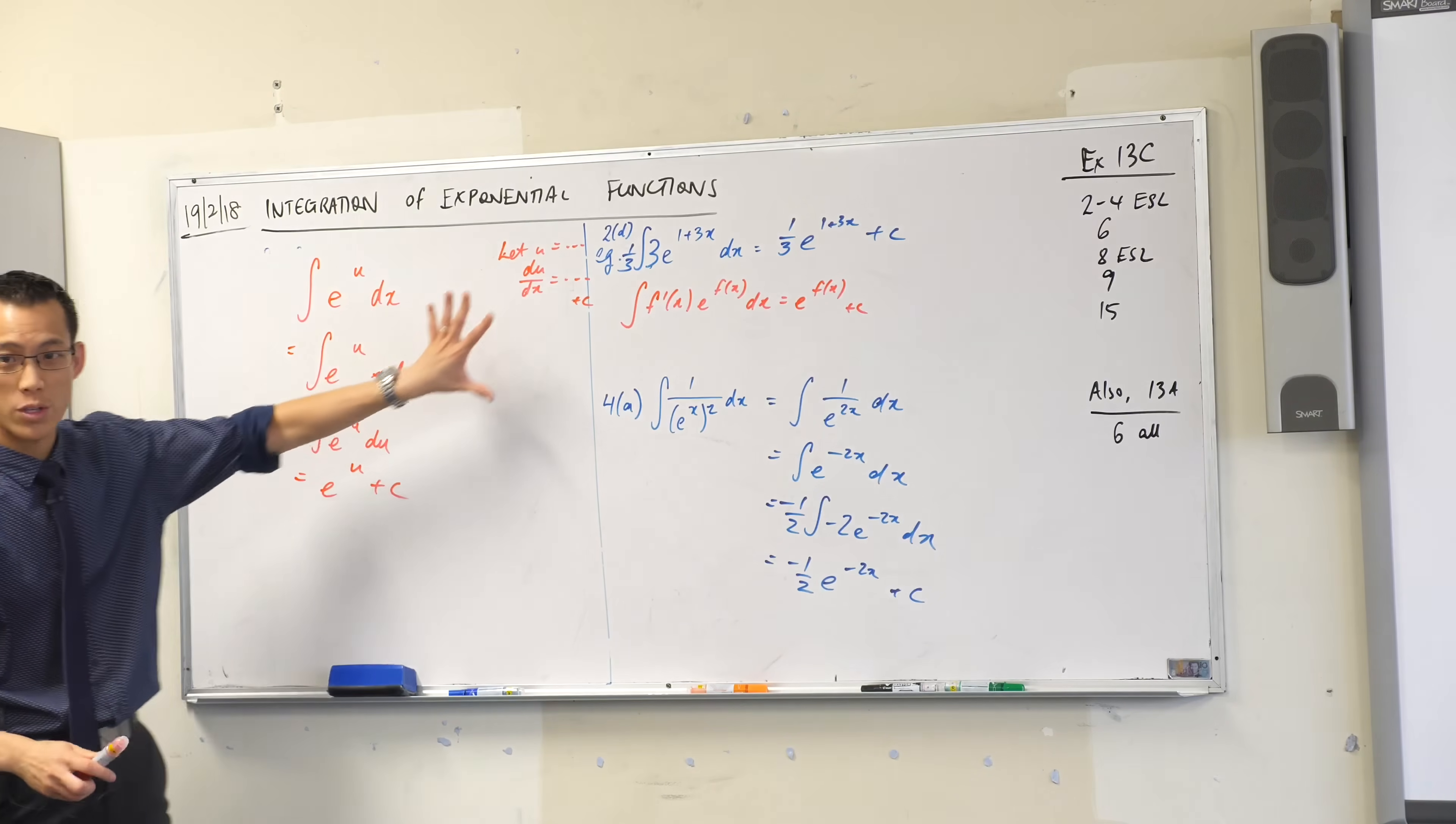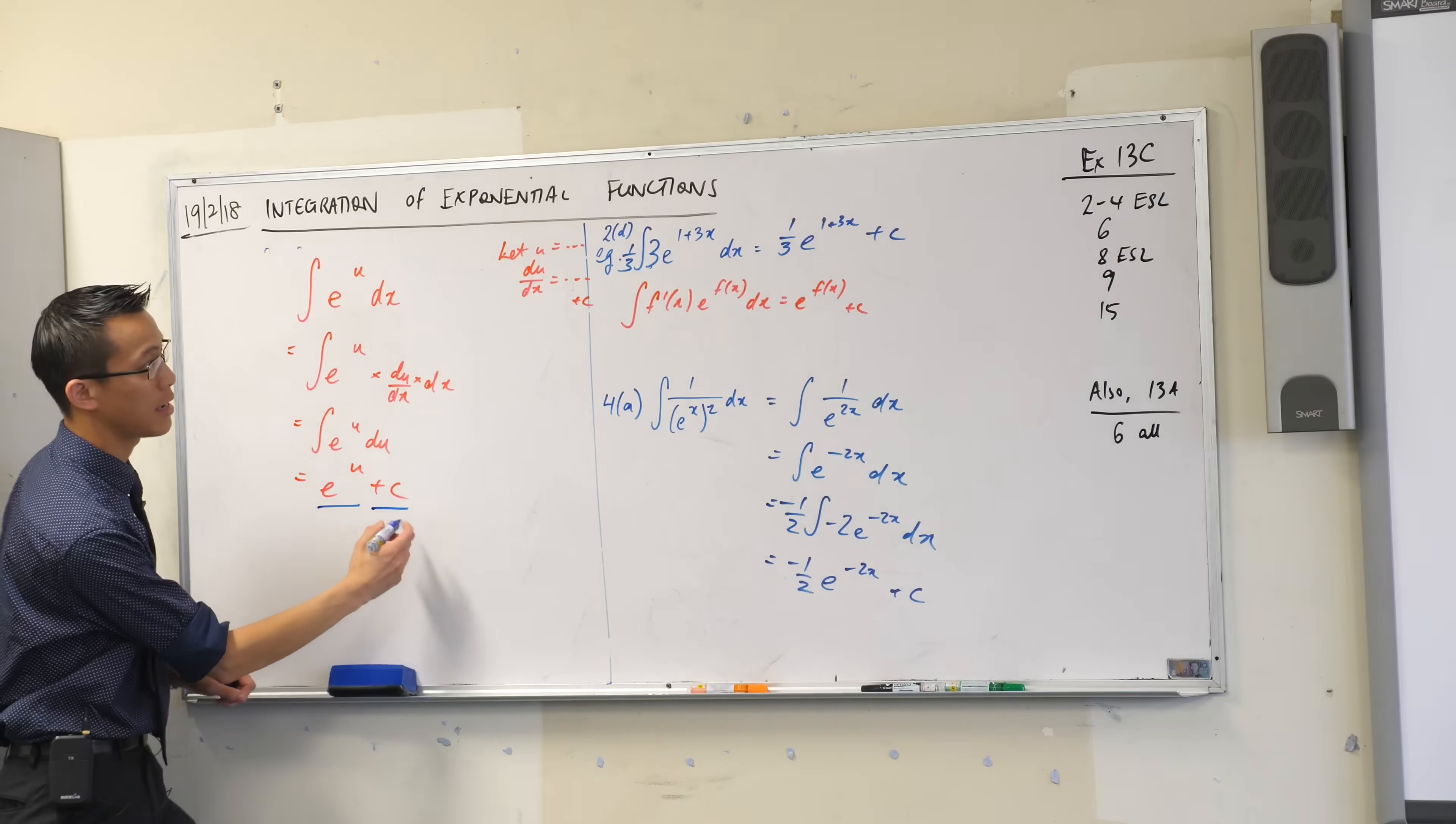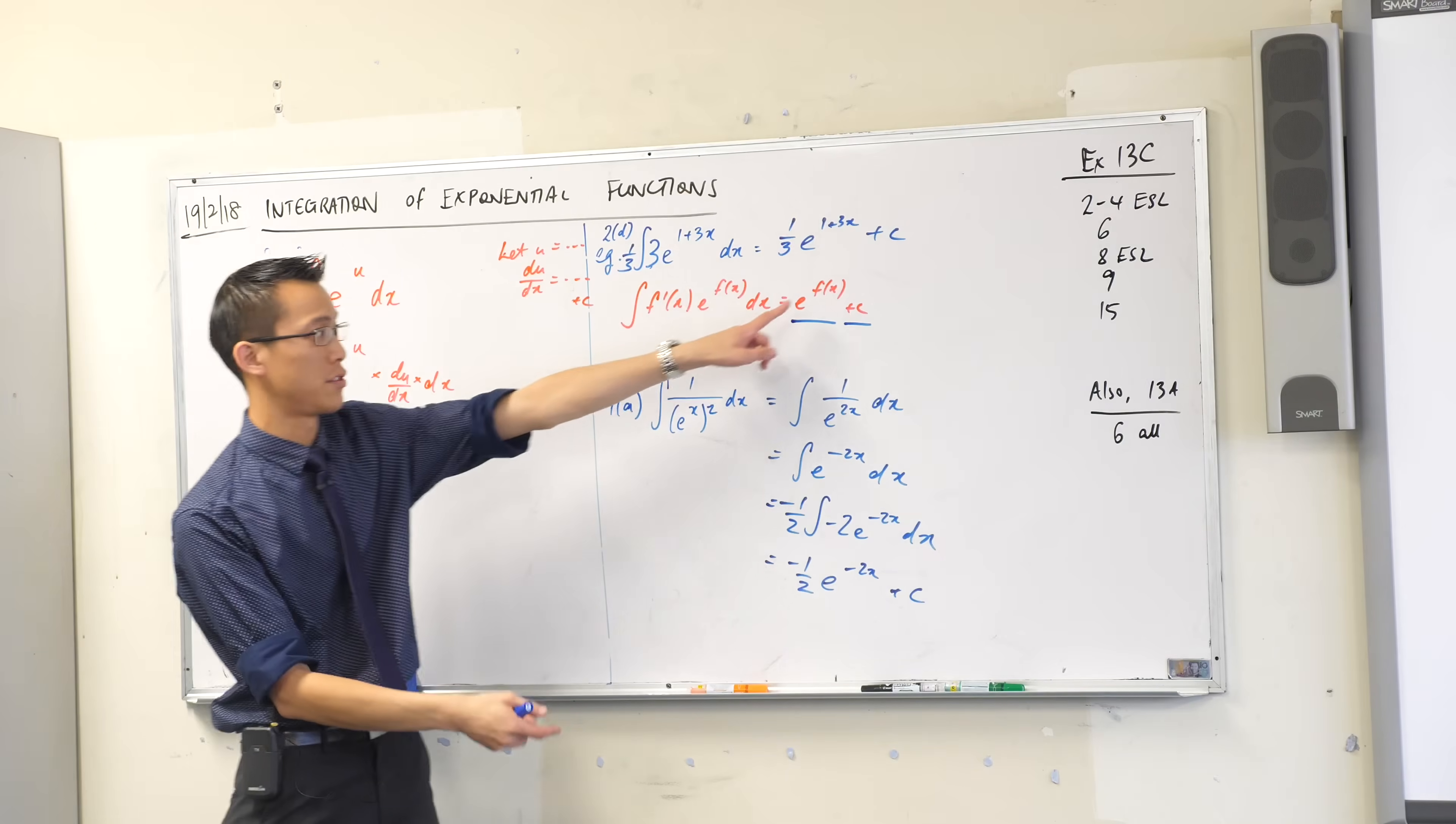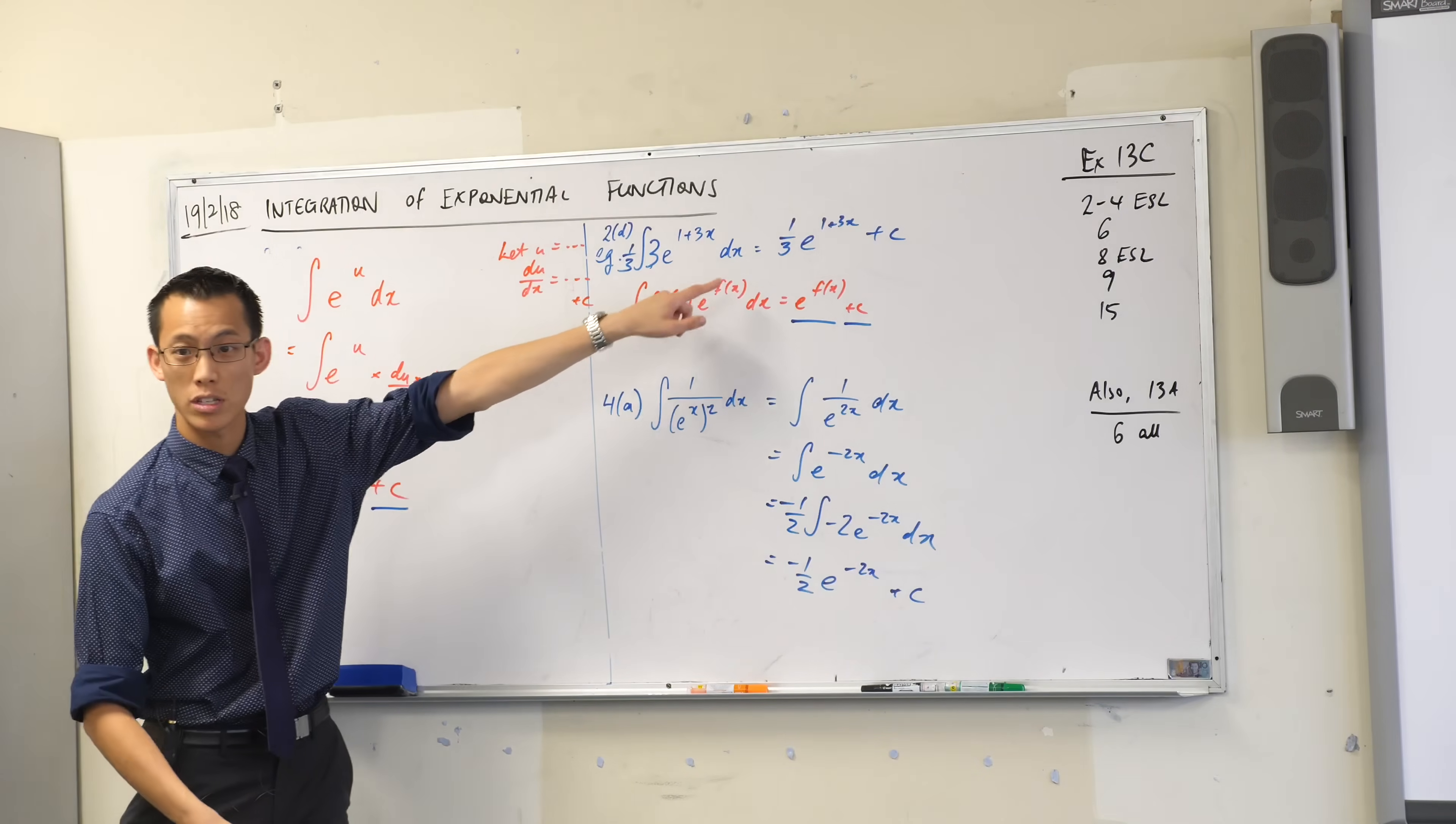Now just compare this with what's written over there. E to the u plus c. That's exactly the same as this. Do you see that? Just labelled slightly differently, just a different letter and different notation. What about this line here? Do you see how similar this is to what's been written here?